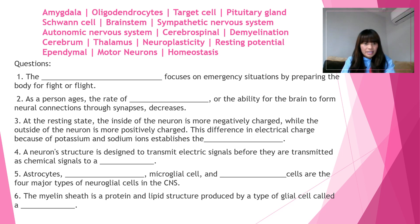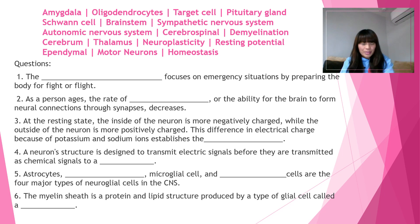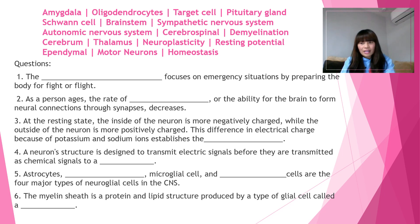Number six: the myelin sheath is a protein and lipid structure produced by a type of glial cell called a blank. The answer is Schwann cell. You can find Schwann cell in the word bank.